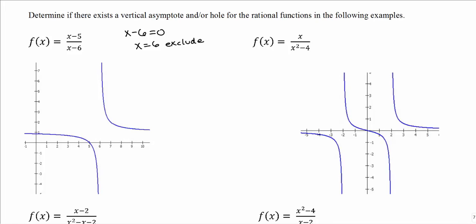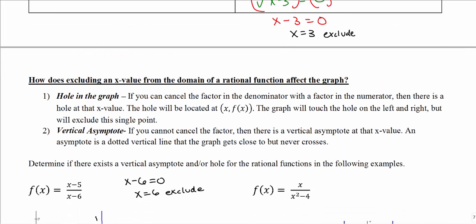Looking at the graph, we can see a vertical line that the actual graph does not touch — that's a vertical asymptote. It results in a large gap: the graph exists to the left and to the right of that vertical line at x = 6, but nothing actually at x = 6. So how do you know the difference if you had to graph it yourself?